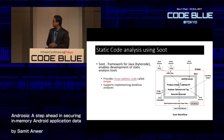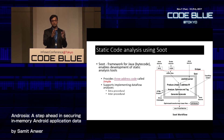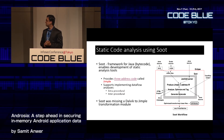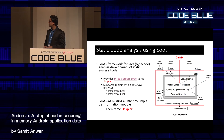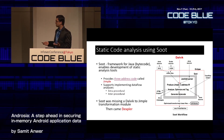Until recently Soot was missing a Dalvik-to-Jimple transformation module, but Dexpler added Dalvik-to-Jimple conversion. Earlier only Java was supported; now Dalvik is supported as well. We can perform the analysis on the intermediate representation and then repackage the application for the user.